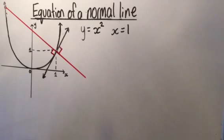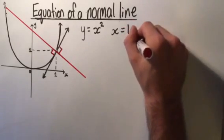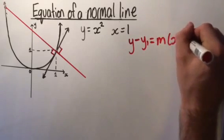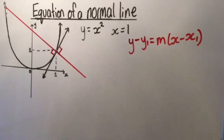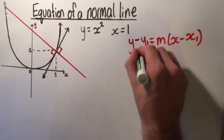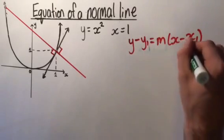So how do we find the equation of this line? Well, it's a straight line so it's going to be given by the point-gradient formula: y minus y1 equals m times x minus x1. The only things we need to find in this formula are y1, m, and x1.